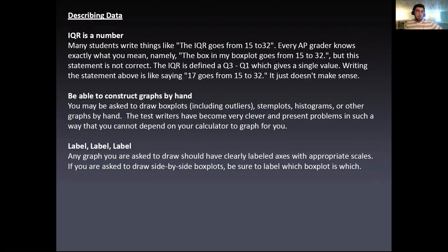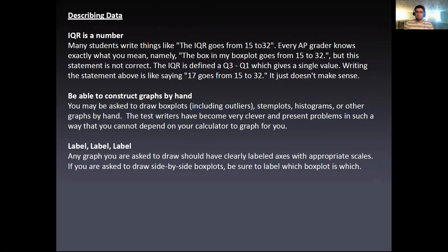Also, be able to construct graphs by hand. You may be asked to draw a box plot including outliers, stem plots, histograms, or other graphs by hand. The test writers have become very clever and present problems in such a way that you cannot simply depend on your calculator to graph it for you. Labeling is very, very important. Any graph you're asked to draw should have clearly labeled axes with appropriate scales indicated. If you're asked to draw side-by-side box plots, make sure you label which one is which — you want to communicate clearly.